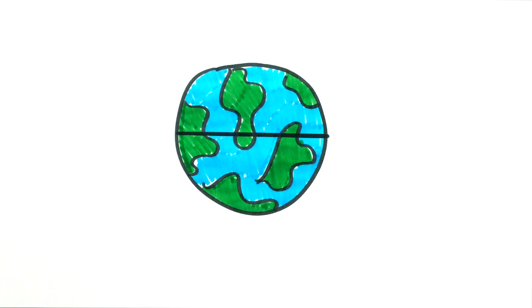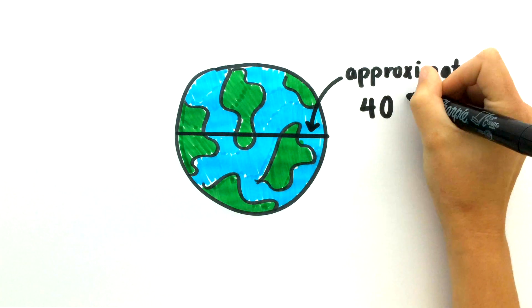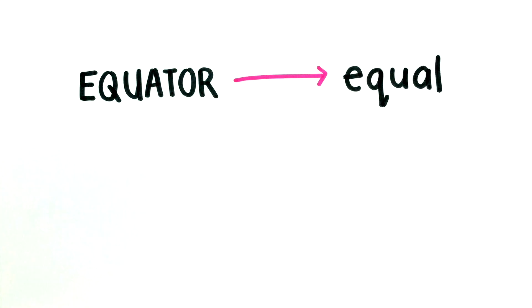The equator is a belt that wraps around the Earth, about equal distance from opposite poles. The root word of equator is equal, meaning even, fair, or level. You may have heard this word before and seen the symbol for it, but do you know where it comes from?